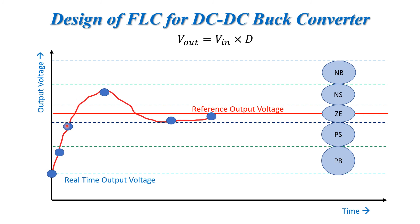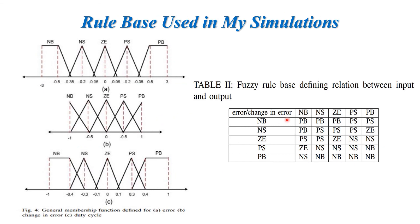We will provide a small duty cycle or a small control signal. By observing the whole trajectory like this, we can design a rule base. We can say that the errors are: negative big, negative small, zero, positive small, positive big — and the change in error has corresponding categories.